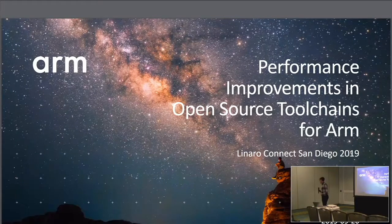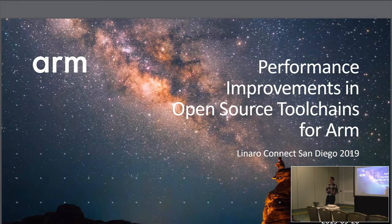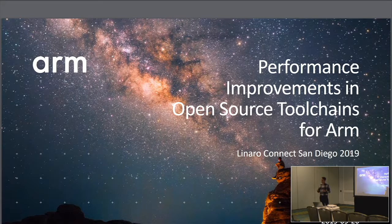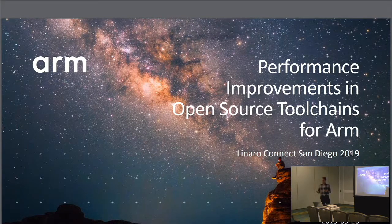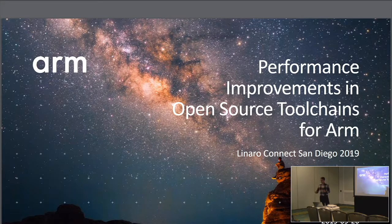I'm James Greenhoush. I'm Principal Engineer at ARM and Engineering Manager for our Compiler Performance team. I'm interested in making sure that software that runs on ARM, particularly C and C++ software, runs as fast as possible. Our team goes after that by looking for where we can add the most value to the open source ecosystems, and where possible add a little bit of extra value through ARM's proprietary toolchains, ARM Compiler.